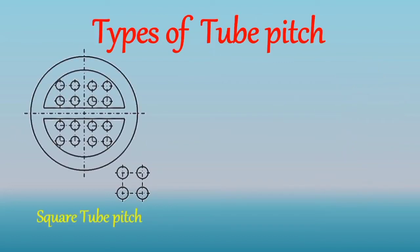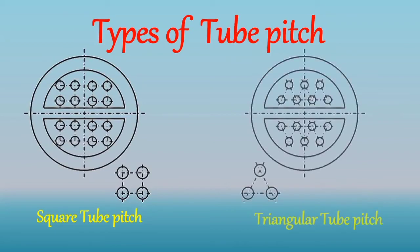From the figure we can understand why it is called triangular pitch and square pitch, as the tubes are arranged in a triangular shape manner or square shape manner. Hence this arrangement is called triangular pitch and square pitch.